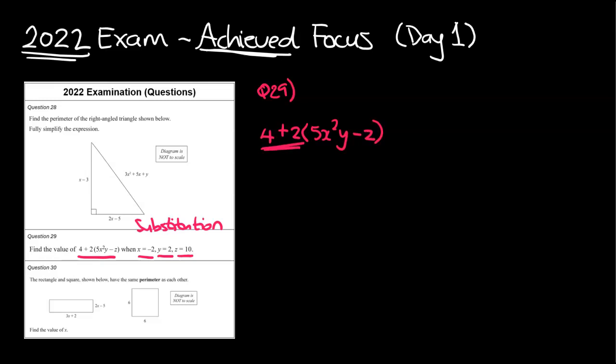So my expression, 4 plus 2 bracket 5x squared y minus z. Just a note, do not start by doing 4 plus 2. That's probably the most common issue we see. That means you're doing BEDMAS wrong, because this 2 is actually a times 2. There's an invisible times sign there. So we've got to do the bracket, then we've got to times by 2, then we've got to add by 4.